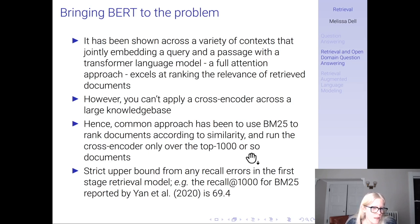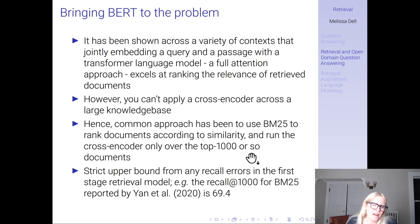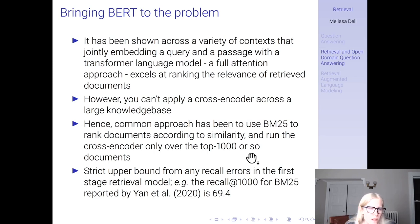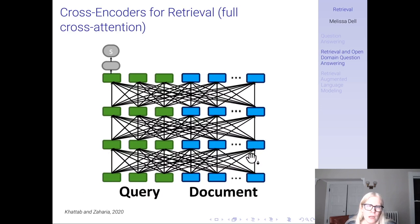The common approach was to use BM25 to rank documents by similarity and then run a cross encoder over only the top thousand or hundred or so documents to pull out the most likely one to have the answer. But the problem is there's a strict upper bound on performance from any recall errors in the first-stage retrieval model. The recall at 1,000 for BM25 is 69.4, meaning about a third of the time the document with the answer is not in the top thousand retrieved passages.